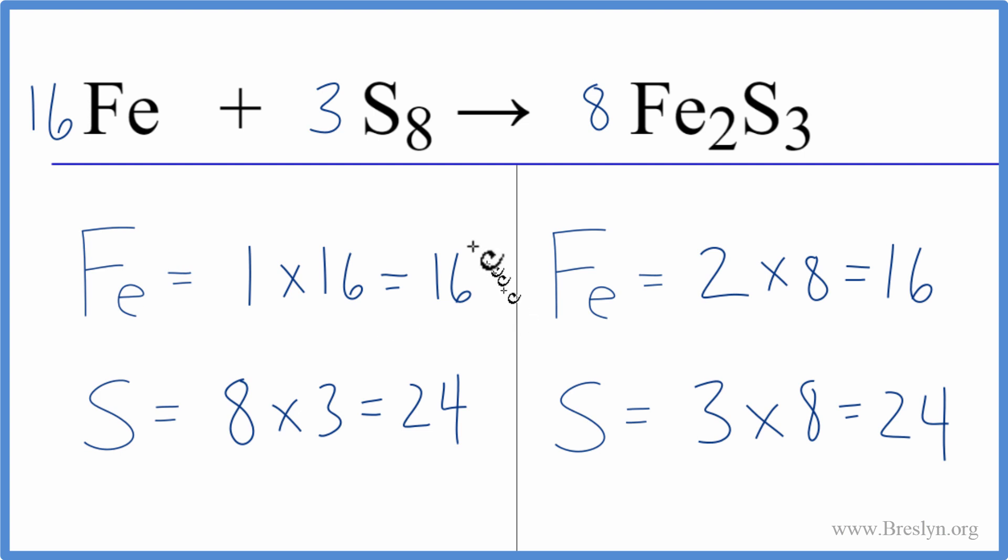And we've balanced the equation. We can't reduce these numbers any lower. These are whole numbers, we can't divide them. So we're going to leave it this way. This is the balanced equation for Fe plus S8.